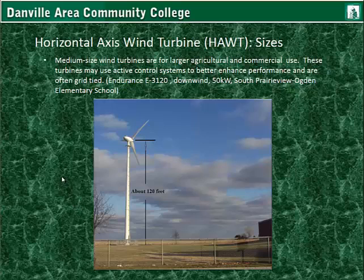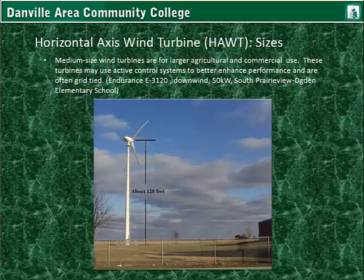Medium size wind turbines are for larger agricultural and commercial use. These turbines may use active control systems to better enhance performance and are often grid-tied. The model shown is an Endurance E3120, a downwind type with an aerodynamic nacelle shape like a football. The blades are slightly different, curled back a little. It's a 50 kilowatt type located at the South Prairie View Ogden Elementary School in Illinois, with a solid tubular tower with a platform and means of climbing for maintenance.